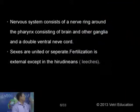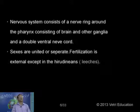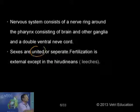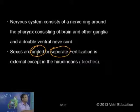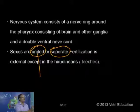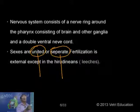Regarding sexes and reproduction: in some cases the sexes are separate — dioecious condition. In some cases sexes are united — bisexual, hermaphrodites, also called monoecious. In the case of earthworm and leech, the sexes are united — bisexual, hermaphrodites. In the case of Nereis or polychaetes, we have the sexes separate — separate male and female individuals.